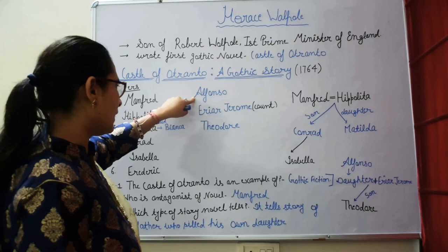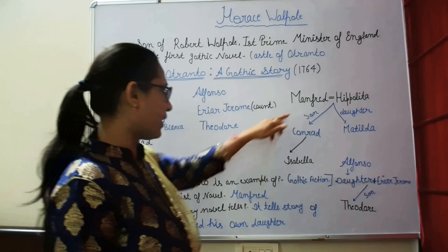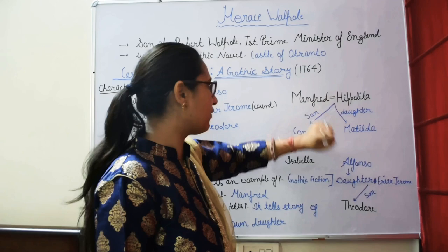Theodore is the son of Alfonso's line and Friar Jerome. Manfred and Hippolyta are husband and wife.